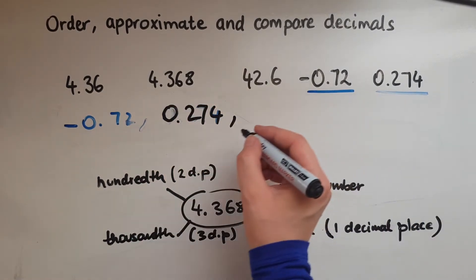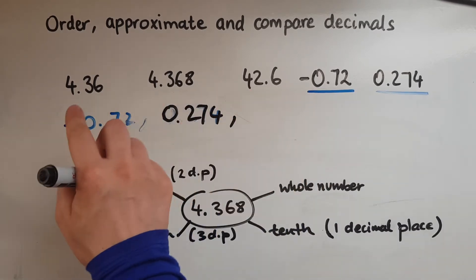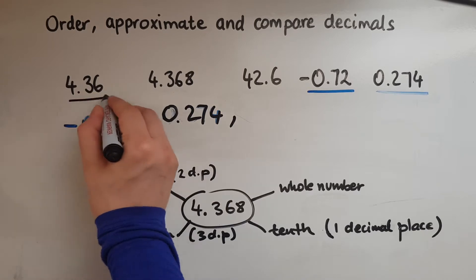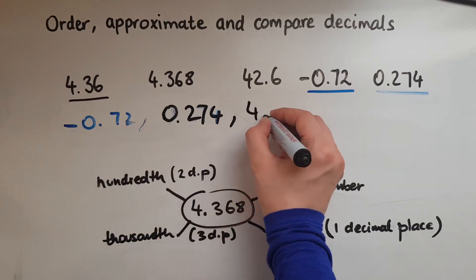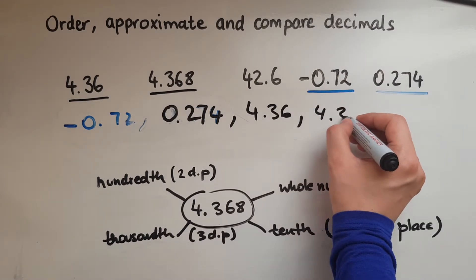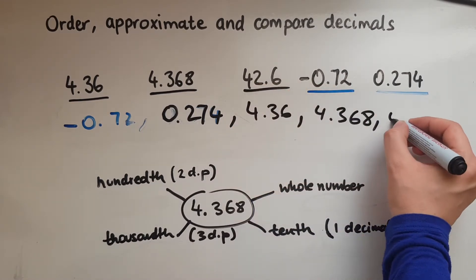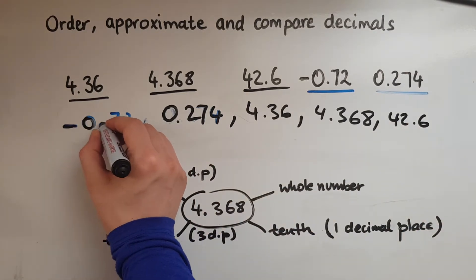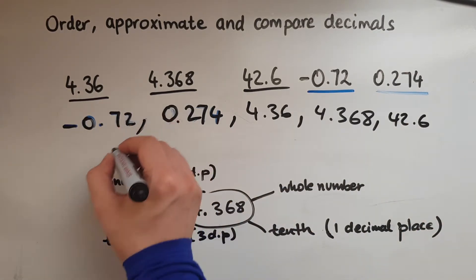And then that would come between them three. We discussed these two were smaller than that. So this is going to be the next one: 4.36, and then 4.368, and finally 42.6. So we've ordered them from the smallest to the biggest.